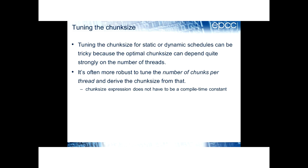However, it's often more robust to tune the number of chunks per thread and then derive the chunk size from that. The expression you give to the chunk size in the schedule clause does not have to be a compile-time constant — it can be a variable. So you can find a good number of chunks per thread and then compute the chunk size at runtime. That often works better and it's easier to find a robust optimal value.